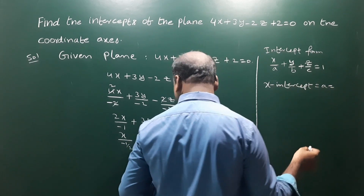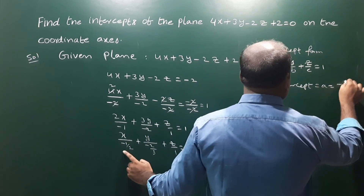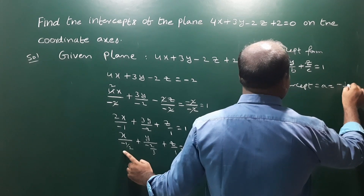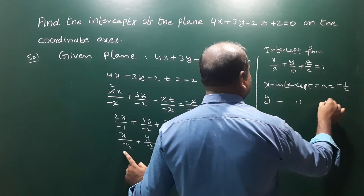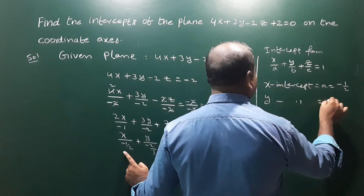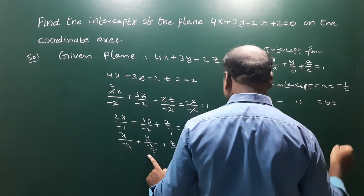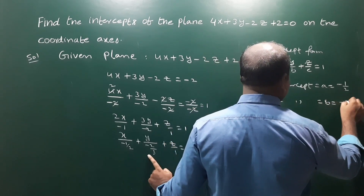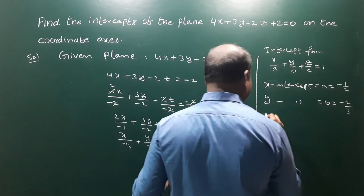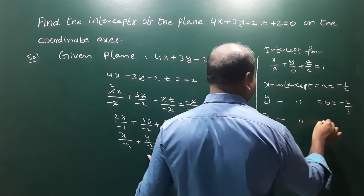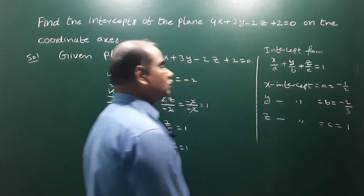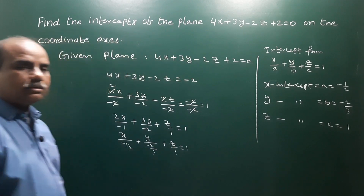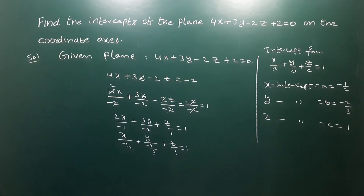By comparing the two equations, we get: the x-intercept a equals minus 1/2, the y-intercept b equals minus 2/3, and the z-intercept c equals 1. Those are the intercepts of the plane on the coordinate axes.